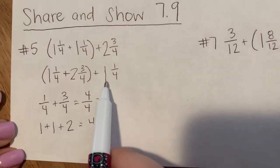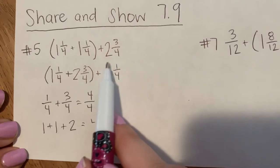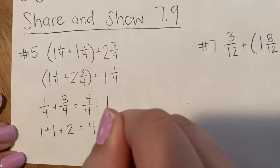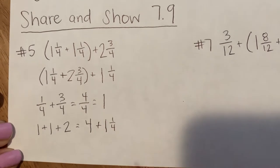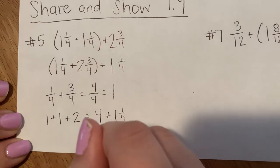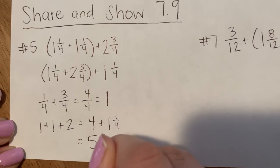I am not finished though, because remember I need to make sure I add what's outside of this first group. So I'm gonna add 4 plus 1 and 1 fourth. And I'm going to add my whole numbers first, so I have 5 and then my fraction 1 fourth left.